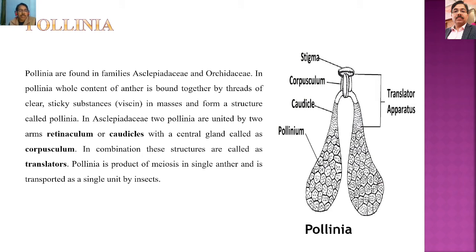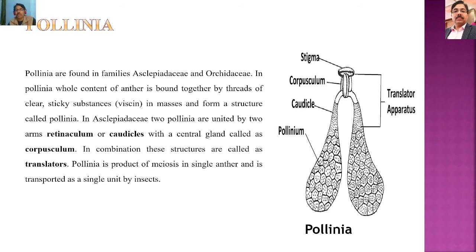Pollinia are a product of meiosis in a single anther and are transported as a single unit by insects. When insects visit the flower of Asclepiadaceae, they take out the pollinia and transport it to another flower, where the pollen grains are released and perform fertilization.